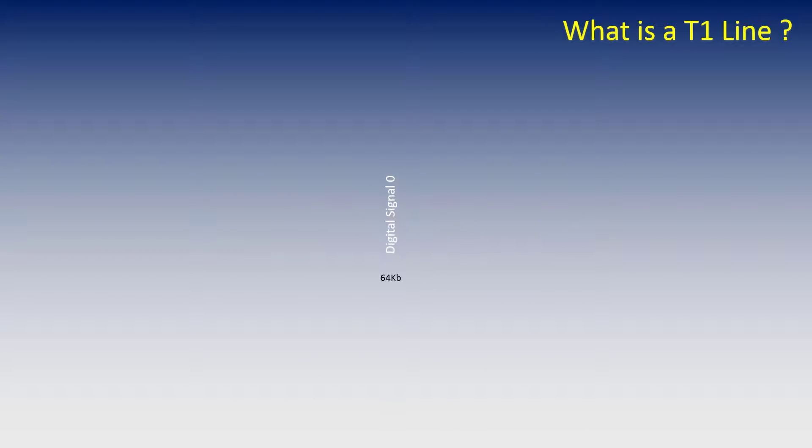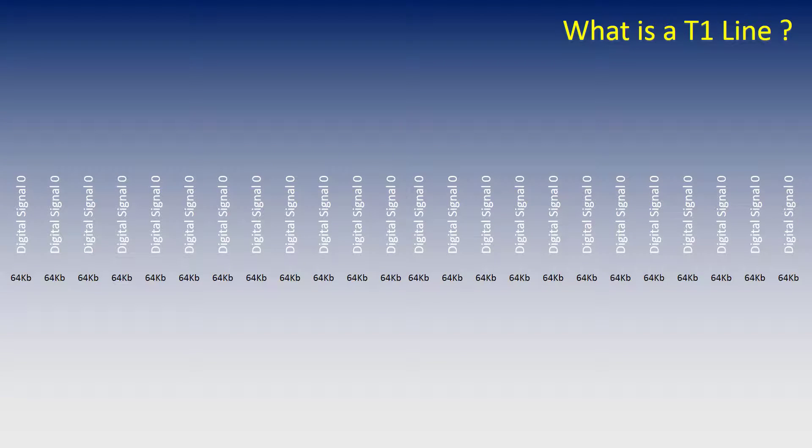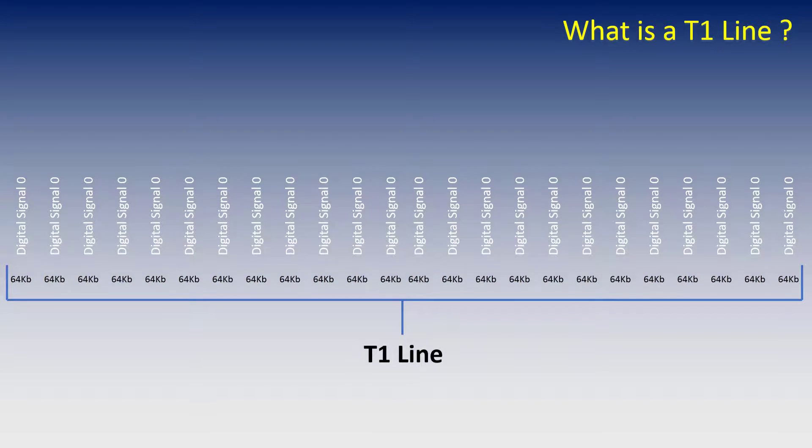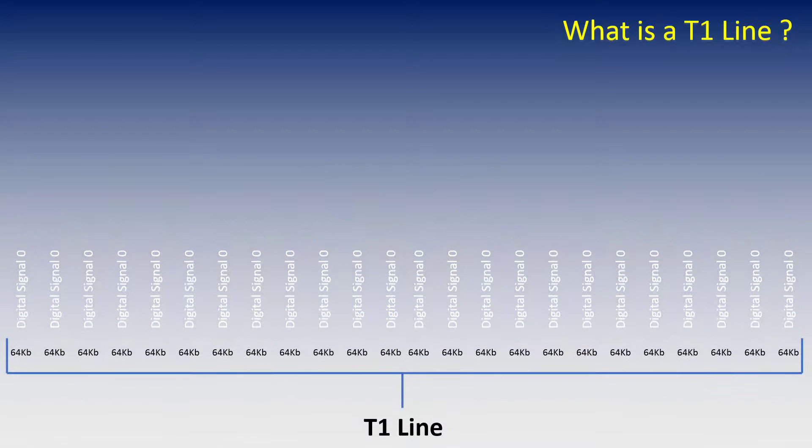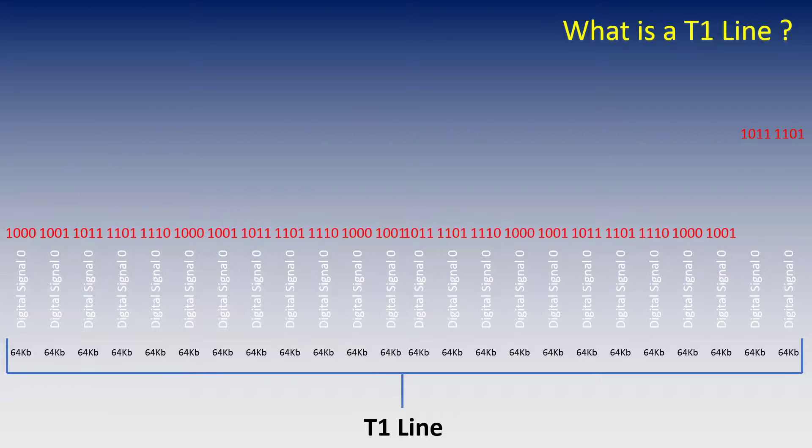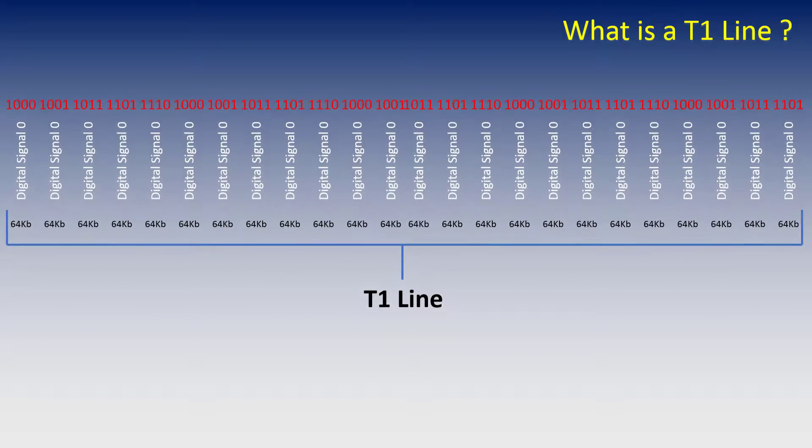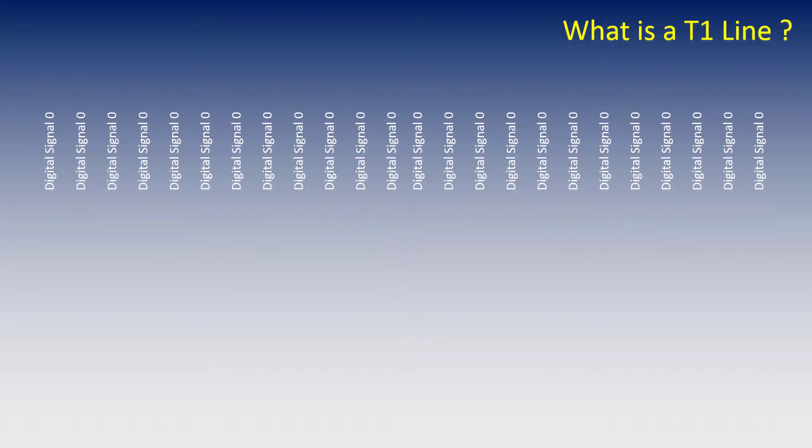If we multiplex 24 DS0s, it becomes a DS1, which is referred to as a T1 line. The binary data is then transmitted using time division multiplexing, or TDM, into a single stream. This is also known as a time slot or time slice.